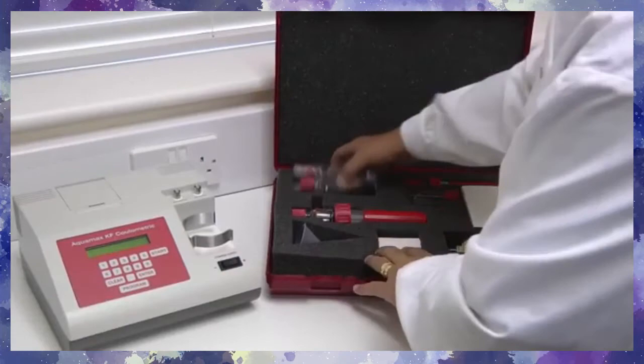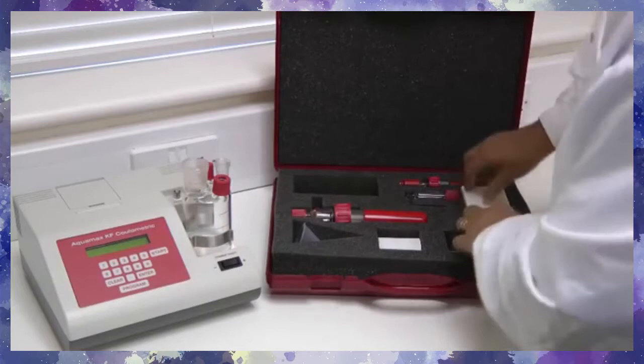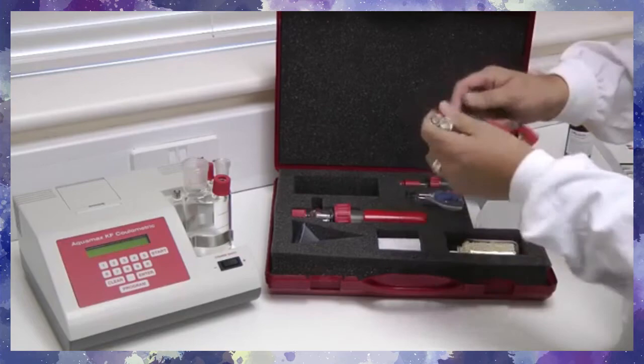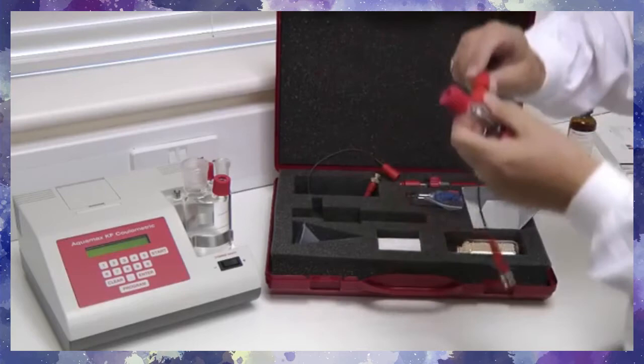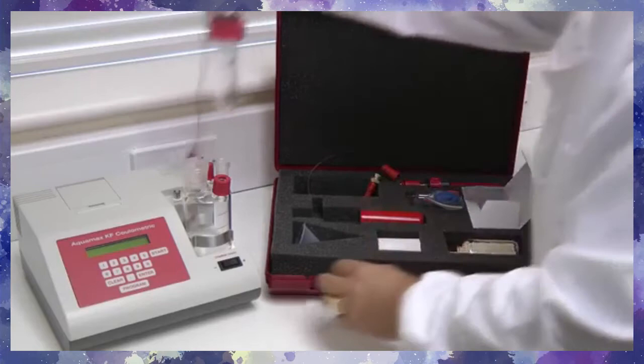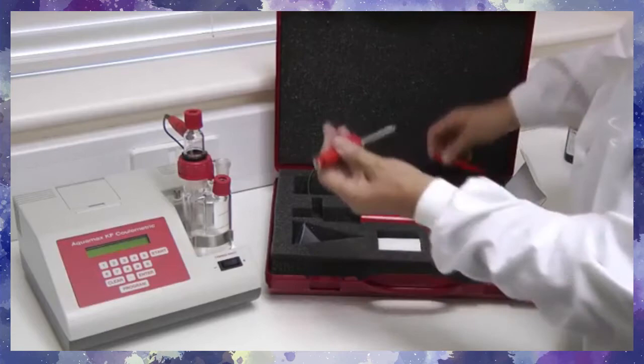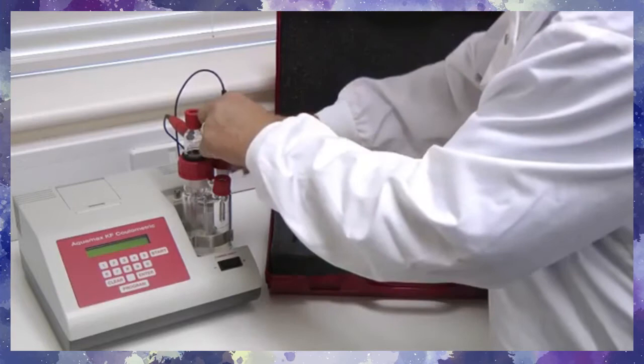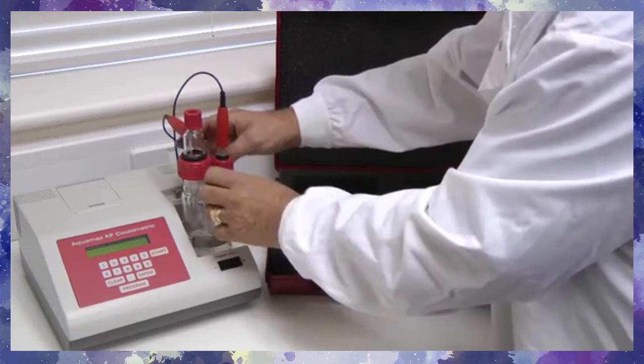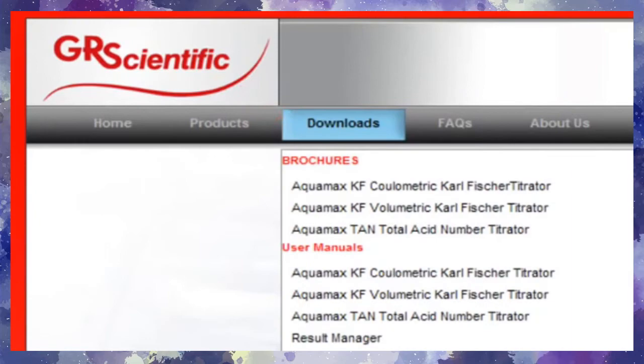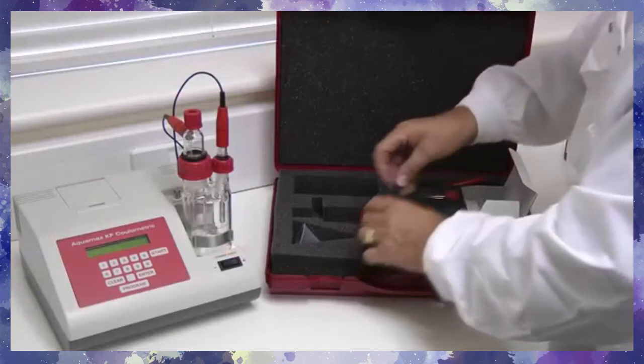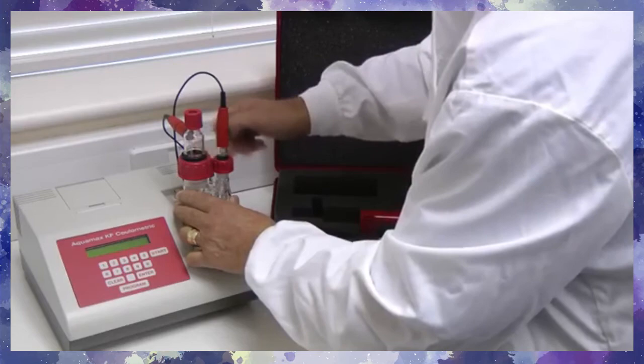To assemble the glassware, start by placing the titration vessel in the holder. Next, take the electrode leads and attach them to the generator and detector electrodes, and then locate the electrodes on the titration vessel. For more detail on this or any other aspect of the Aquamax KF Moisture Meter, please refer to the user manual, which is available on the GR Scientific website. The injection sceptre is fitted into the plastic screw cap connectors and located onto the injection ports of the titration vessel.